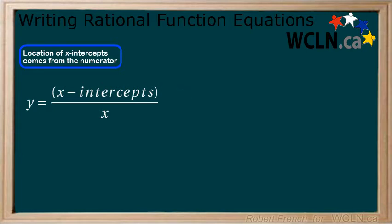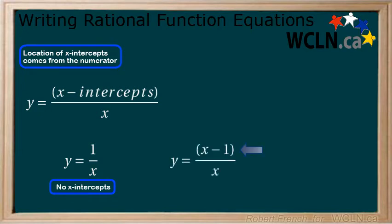Each x-intercept is accounted for by adding a factor. Here is our basic rational function of y equals 1 over x. There are no x-intercepts. If we add an x minus 1 to the numerator, we get a rational function with an x-intercept at x equals 1.